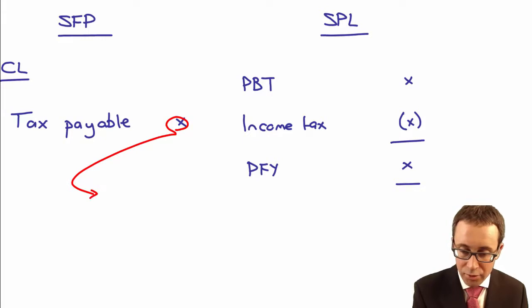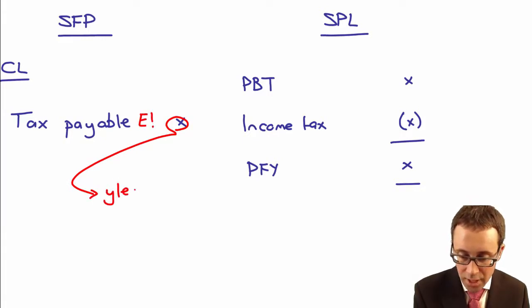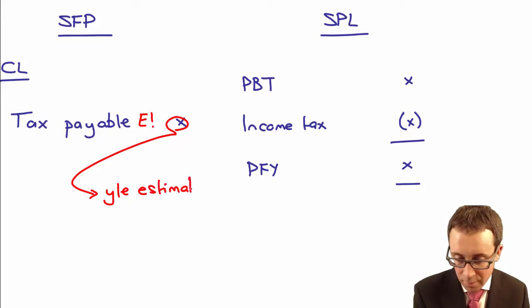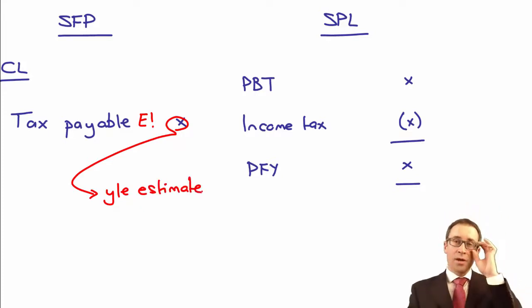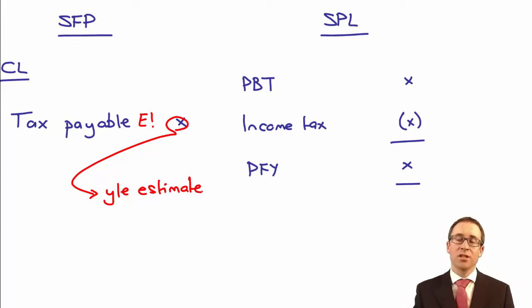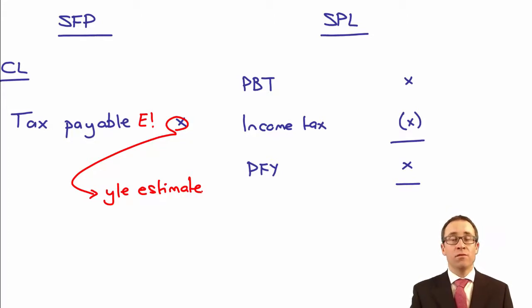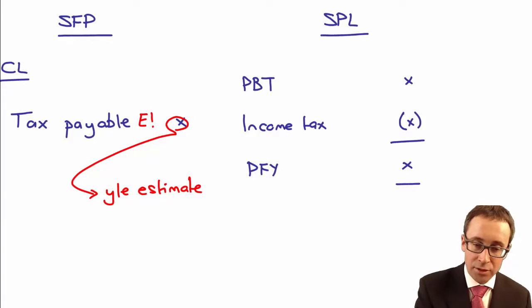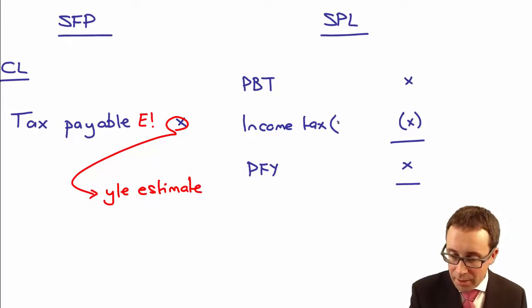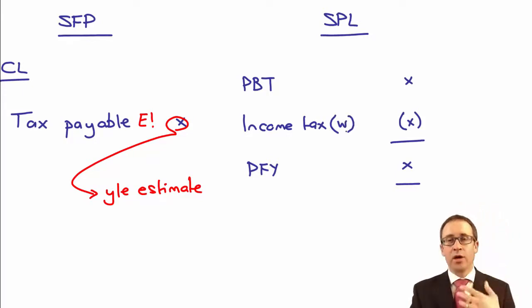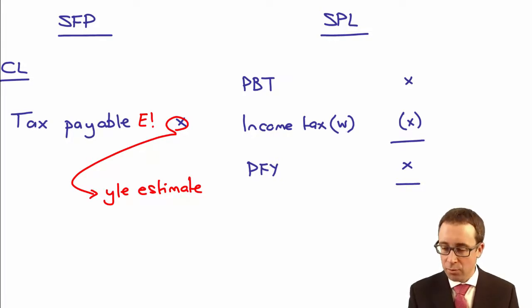The tax payable is pretty straightforward — that is just your year-end estimate. You're not going to have to do any tax computation like we see in the final part of the syllabus; you'll actually be told what the estimate at the end of the current year is. The income tax expense involves a working similar to what we saw at the certificate level.